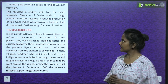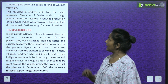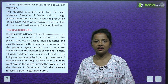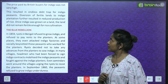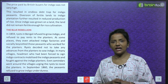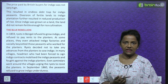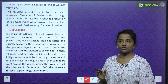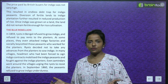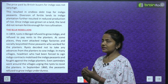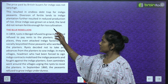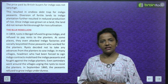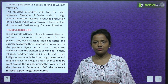The price paid by British buyers for indigo was not very high, resulting in endless debt traps for indigo peasants. The diversion of fertile lands to indigo plantation further resulted in reduced production of rice. Once indigo was grown on a piece of land, that land did not remain fertile enough for rice cultivation afterward.